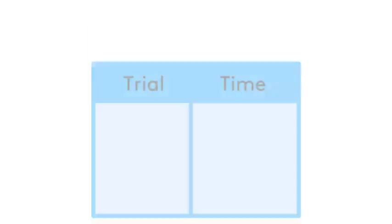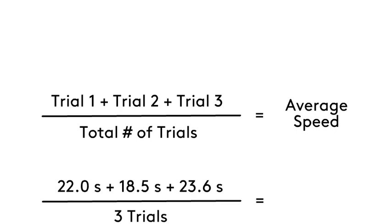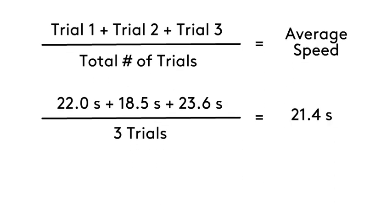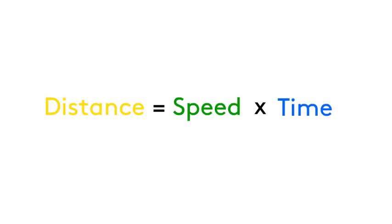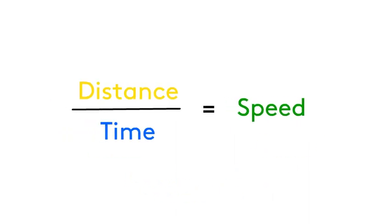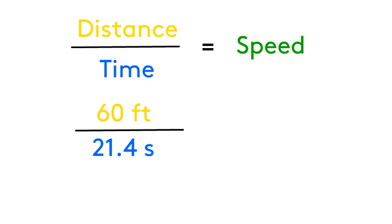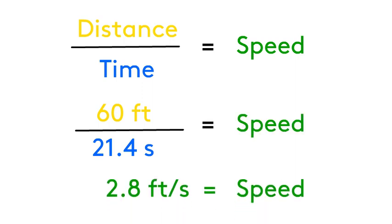Now let's crunch some numbers. We have our three trials that yield an average of 21.4 seconds. What does this mean in the context of our equation for speed? The equation for speed is distance over time. Given that we know the time of 21.4 seconds and we measured out 60 feet, we have all the information we need. So Bella runs at 2.8 feet per second.